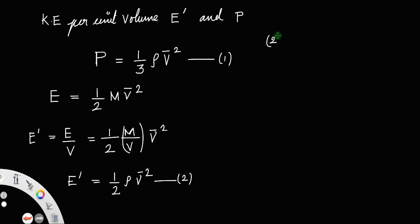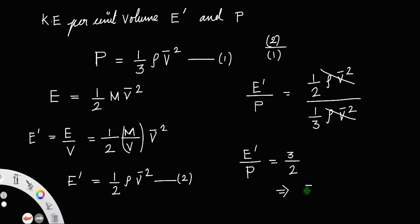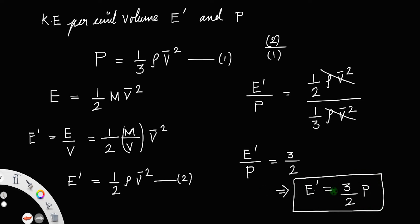So, if you divide equation 2 by equation 1, then on the left side we have E'/p, which equals (1/2)ρv̄² divided by (1/3)ρv̄². We can cancel ρv̄² from numerator and denominator, so E'/p equals 3/2, which means the average kinetic energy per unit volume equals (3/2) times the pressure exerted by the gas.